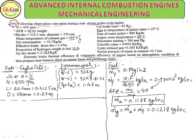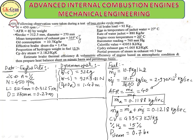CV of fuel = 43,953 kJ/kg. Percentage of H₂ in fuel = 15% — this is important. Partial pressure of steam p_steam = 0.7 bar. This is the field data.